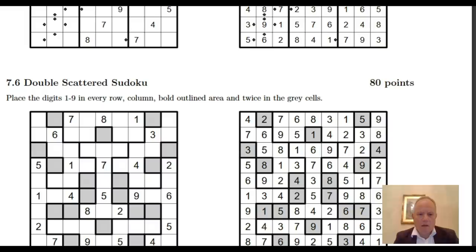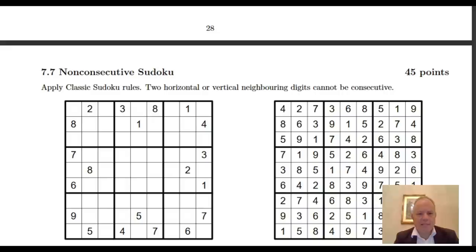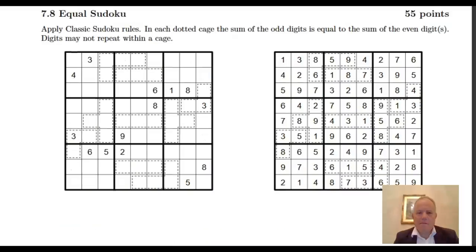All the gray cells contain the numbers one to nine twice in this case because they look like there's about 18 of them. And non-consecutive, these are beautiful sometimes so maybe we'll have another look at that one a bit later. Equal Sudoku in which case in each dotted cage the sum of the odd digits is equal to the sum of the even digits.